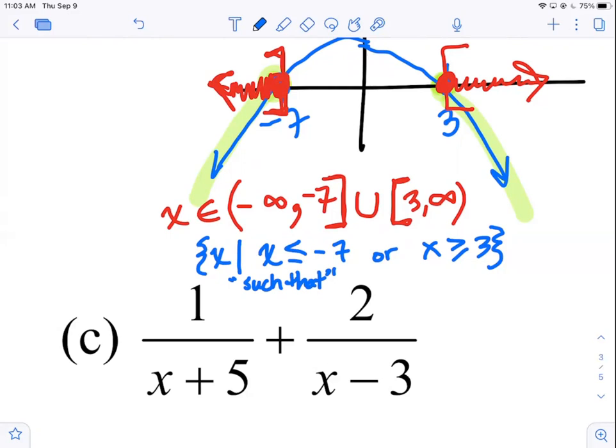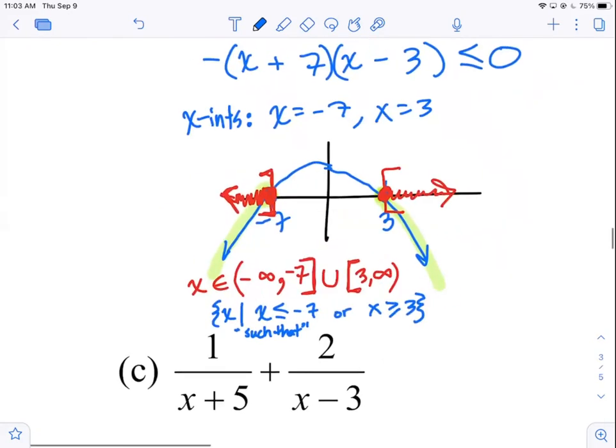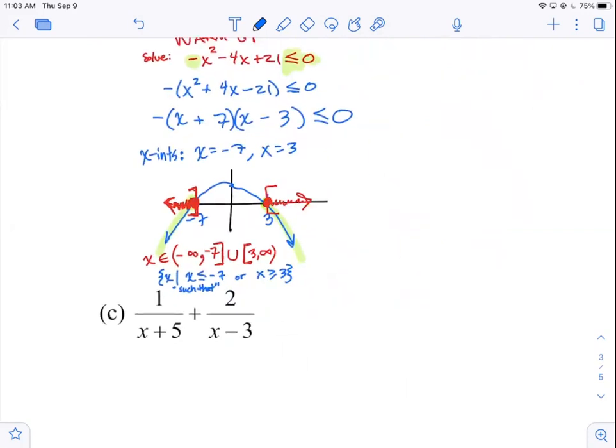So when you see that as a multiple choice question on the test, I fancy it up with the set builder notation. So you can go with interval notation too. If you had gotten rid of the negative, you would get the exact same answer, because now your parabola would open up. Questions on that?